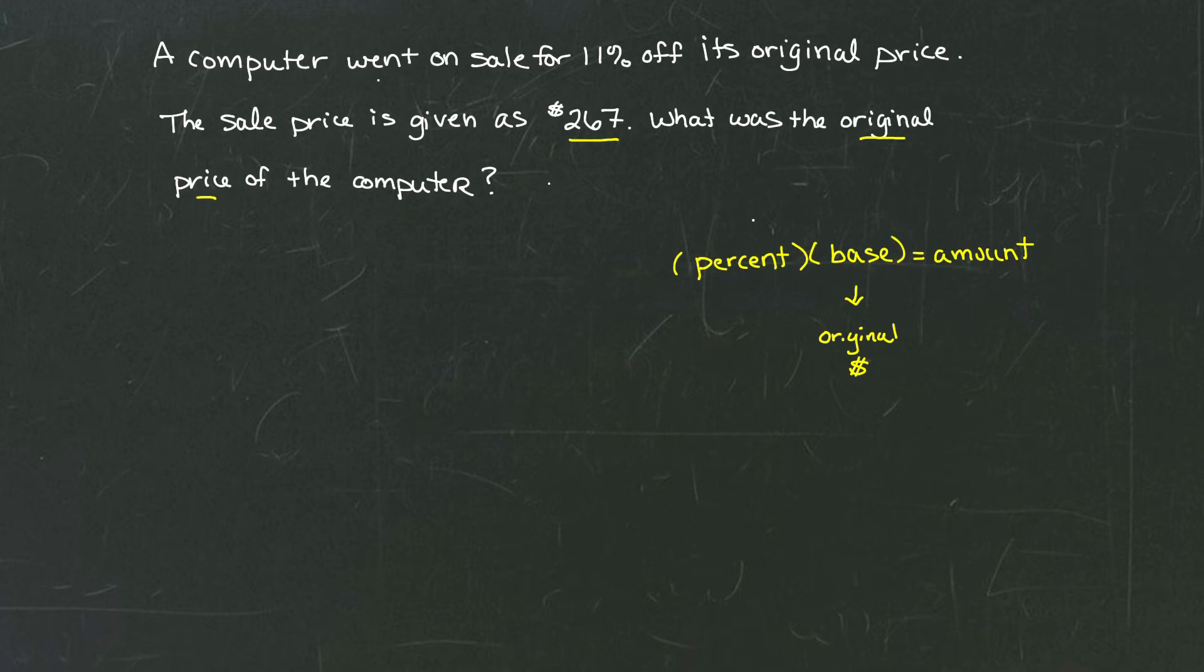And the discounted price, the sale price, actually turns out to be the amount after the discount. So $267 takes the place of amount in this equation.